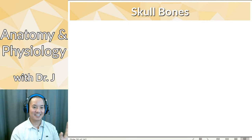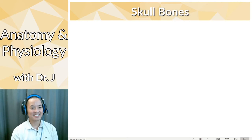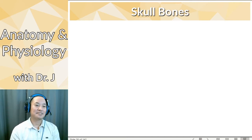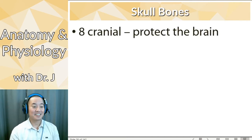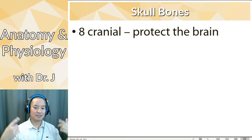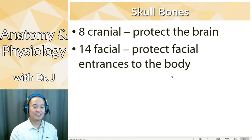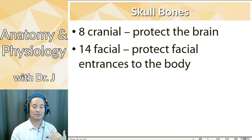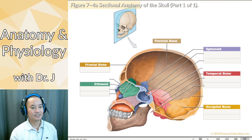That's how I know what parts are the axial skeleton. Now for skull bones — so you have cranial bones, which refers to the part that surrounds the brain. Cranial bones protect the brain. And then you have 14 facial bones, which protect the facial entrances to the body. So you have bones not only for structure but for protection as well.